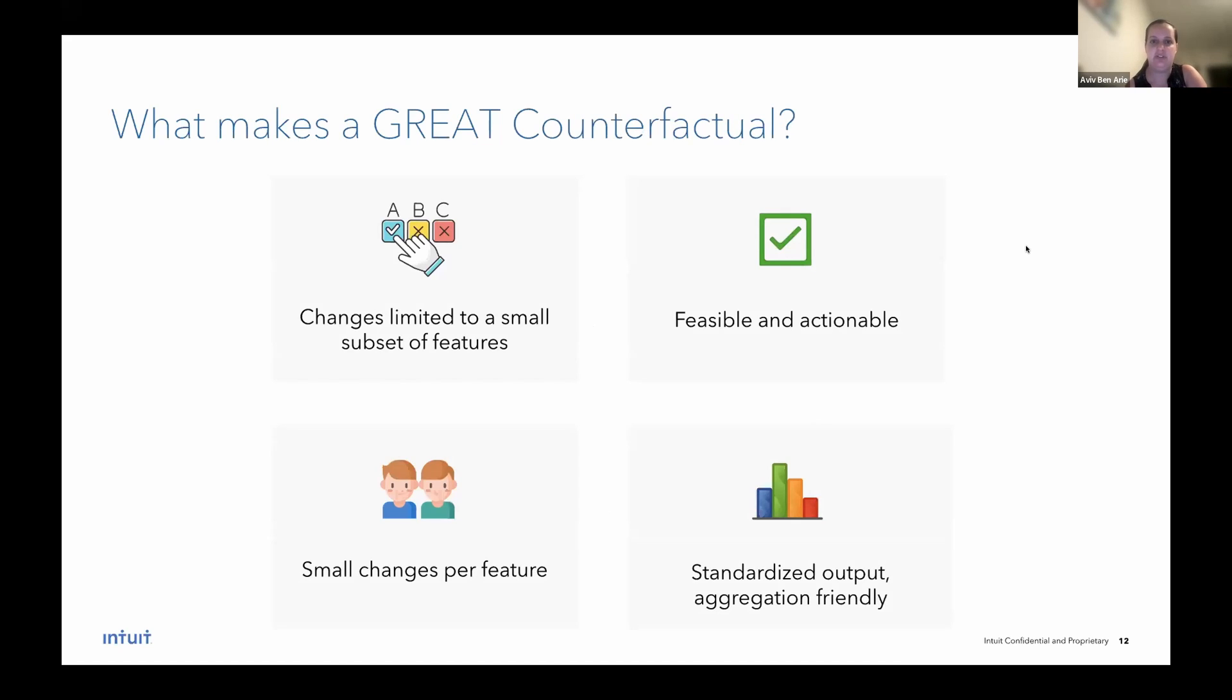So after we understood intuitively what counterfactuals are, let's try to think what would make a great counterfactual. So a great counterfactual would have changes that are limited to a small subset of features. Several papers show that in order to make explanations comprehensible to humans, they need to be very compact, meaning to have only a very small subset of affected features. As we want the counterfactual to be close to the original instance, we also need to make sure that the changes per feature are relatively small.